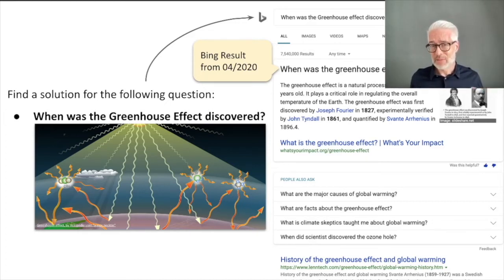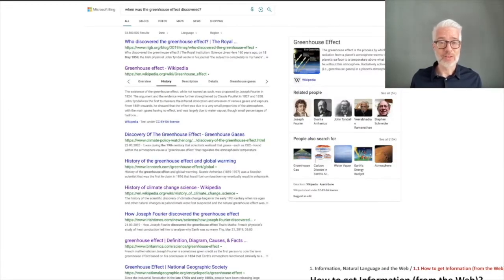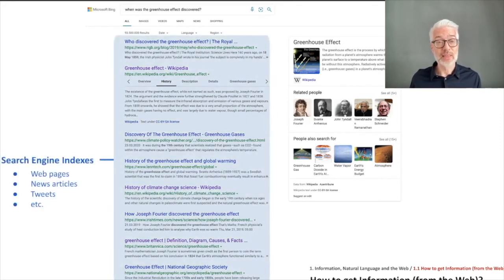What we want to do now is analyze a bit more the search result that we get from the search engine. What we see here as a result when we're looking for the greenhouse effect are two columns. Most search engines organize it like this, some display it in a single column. In the upper part there's this small little box you see here on the right side.